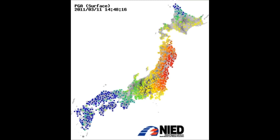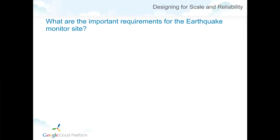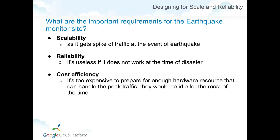Let's discuss how the app is designed. This system is built with App Engine as well as the data center hosted by NIED. It has many sensors on the ground surface all over Japan, and all the metrics are collected at their data centers, where they create an image file. They publish it to Google App Engine every one second, and the users' browsers poll that image every two seconds. At peak rate, with about 20,000 users, App Engine will be getting about 10,000 requests per second.